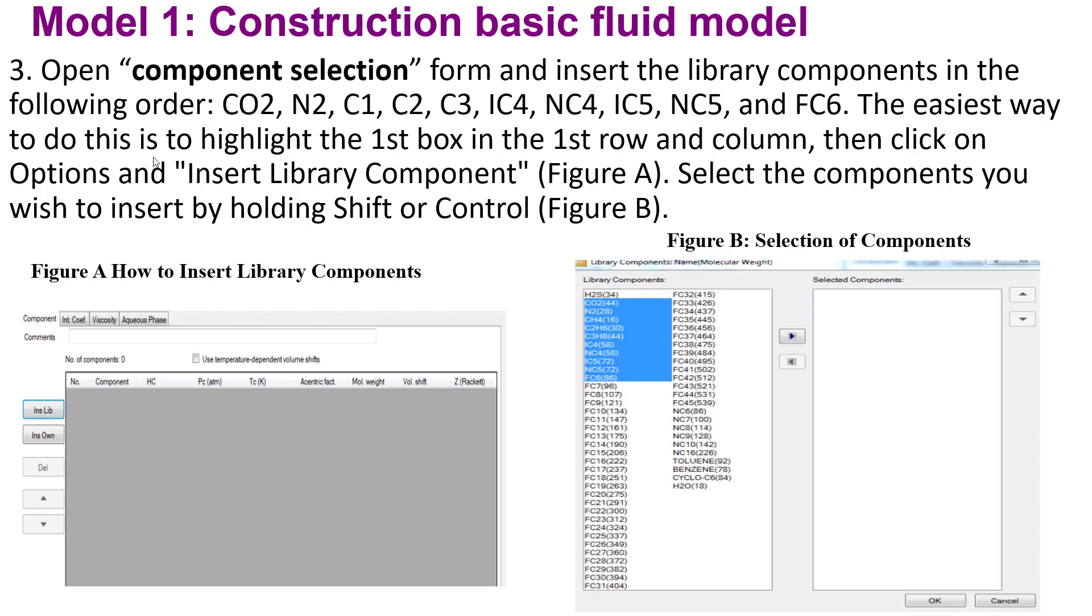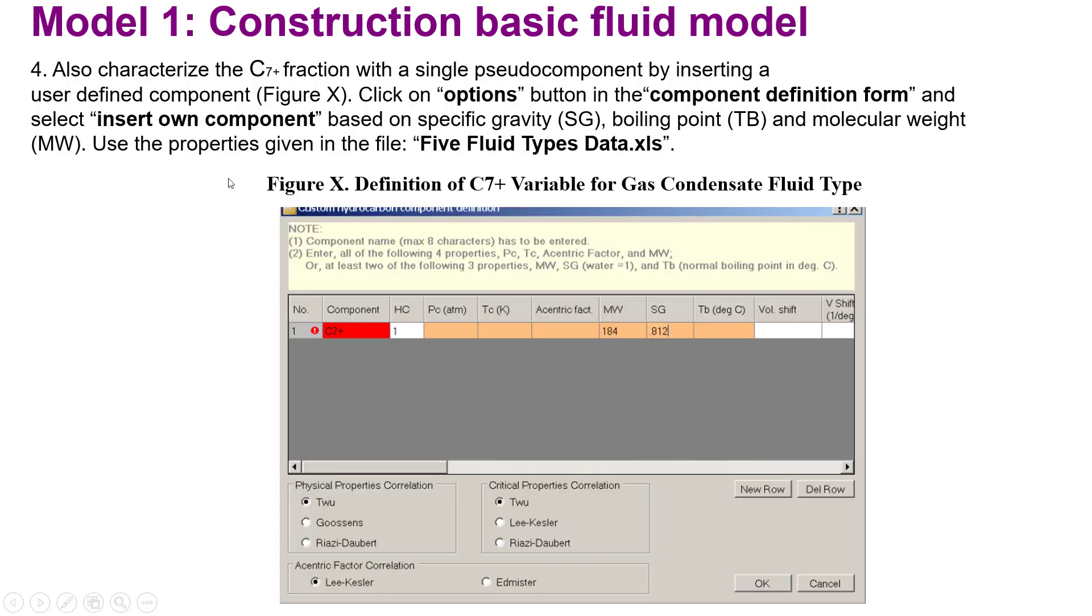The easiest way to do this is to highlight the first box in the first row and column. You can see the demonstration of inserting library components in Figure A. This interface will show you how to insert library components, and Figure B will show the components you should select for your data.